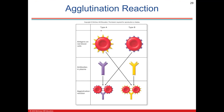Looking at the diagram: type A has the A antigen, type B has the B antigen — slightly different protein morphology. Type A has anti-B antibodies which agglutinate type B blood. The antibodies have receptors and the antigens have spikes — they fit together like a lock and key, causing agglutination, which is binding and clumping.